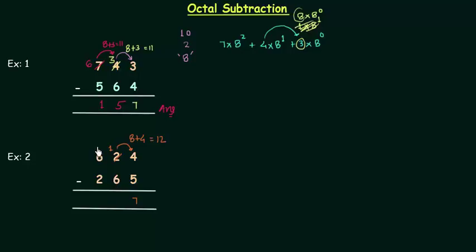1 is smaller than 6 so again we have to take borrow. 8 plus 1 is equal to 9, and 9 minus 6 is equal to 3. This 6 is now written as 5 because it has given the borrow. 5 minus 2 is simply 3. So 337 is the answer of this octal subtraction.